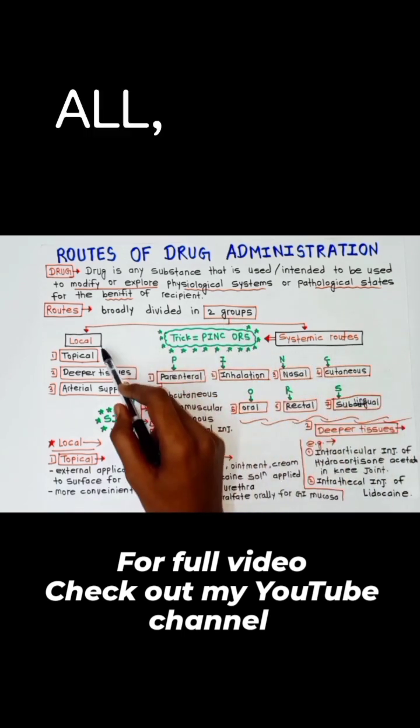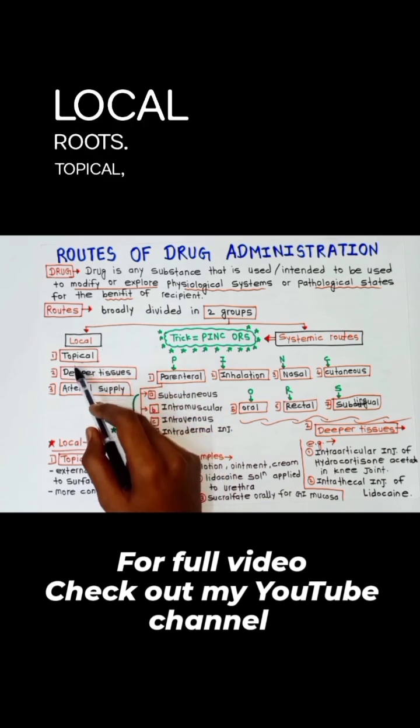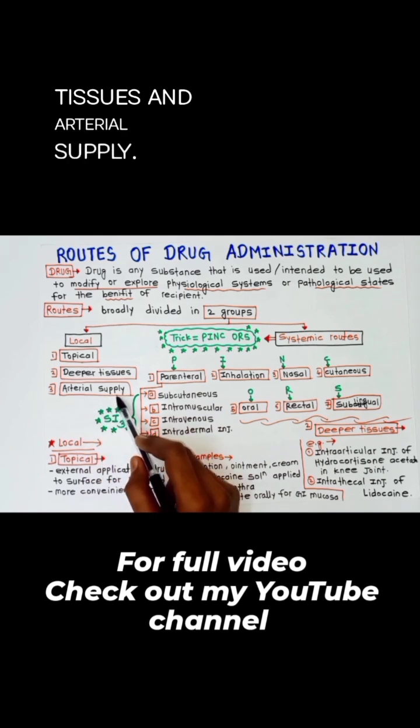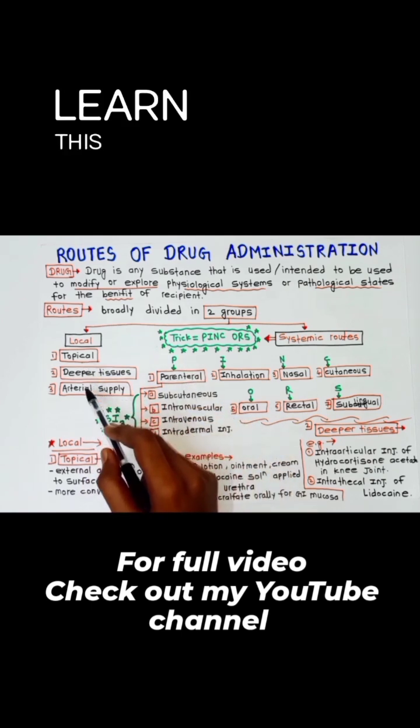First of all, local routes. There are three local routes: topical, deeper tissues, and arterial supply. We'll learn this in detail afterwards.